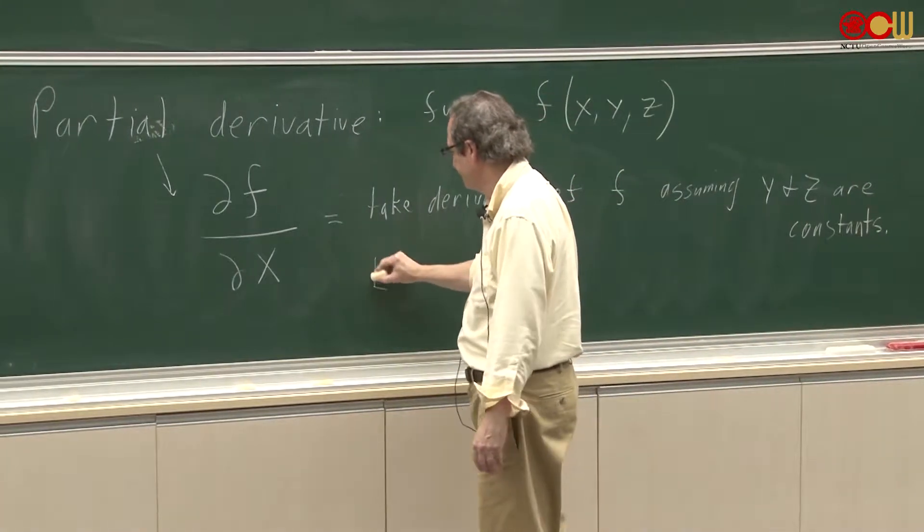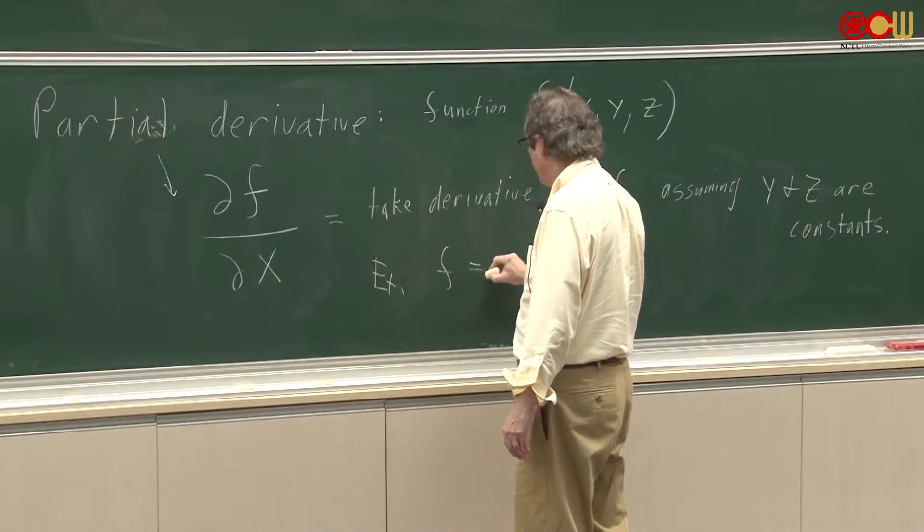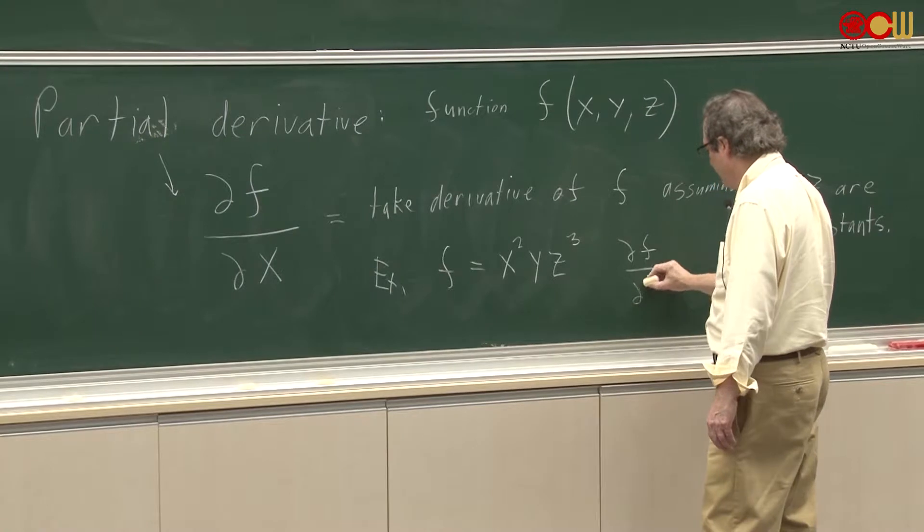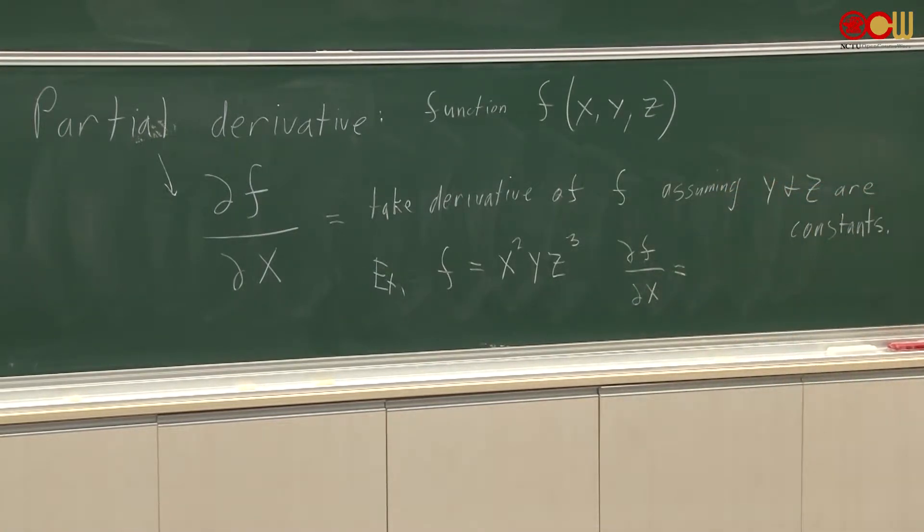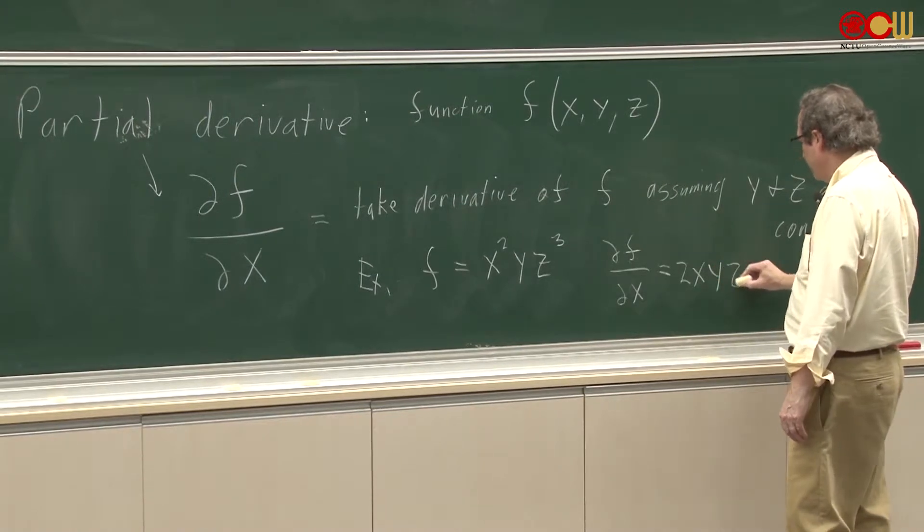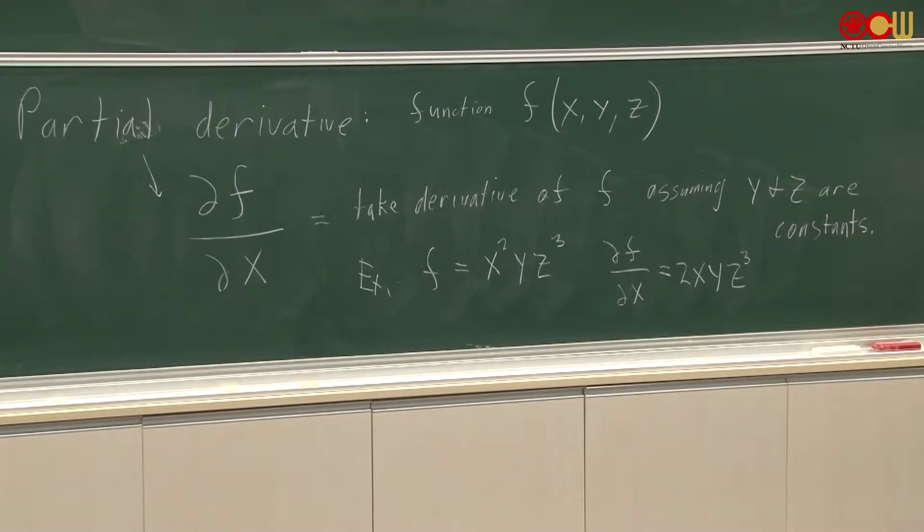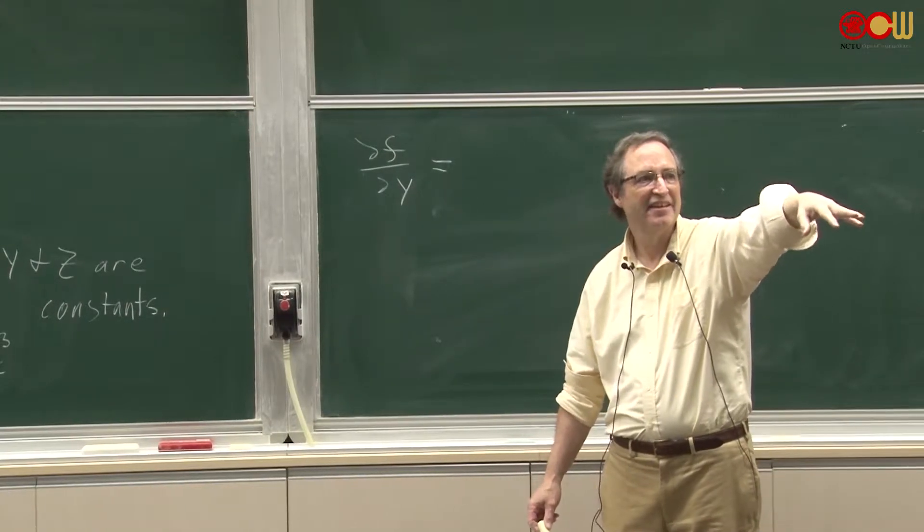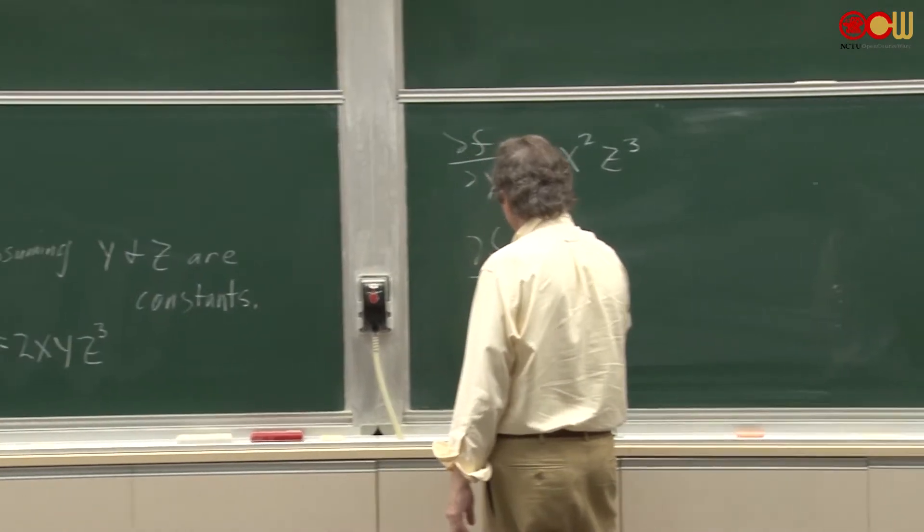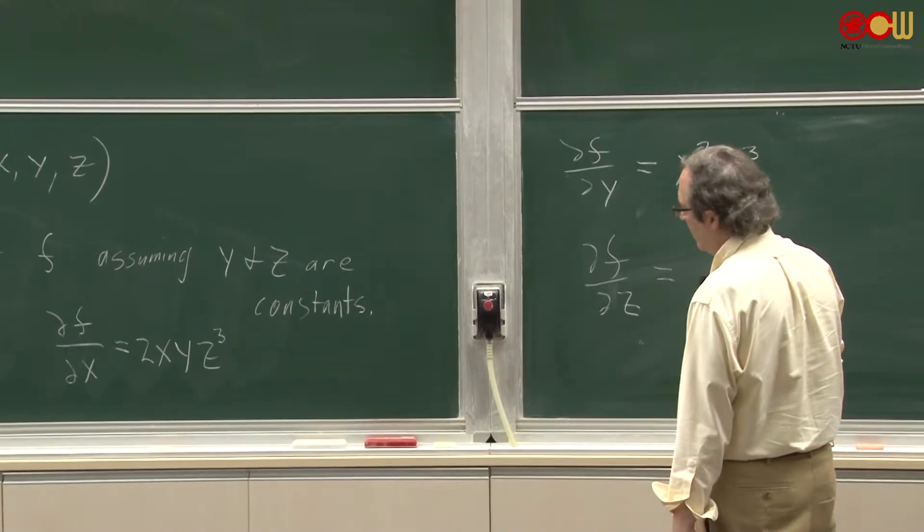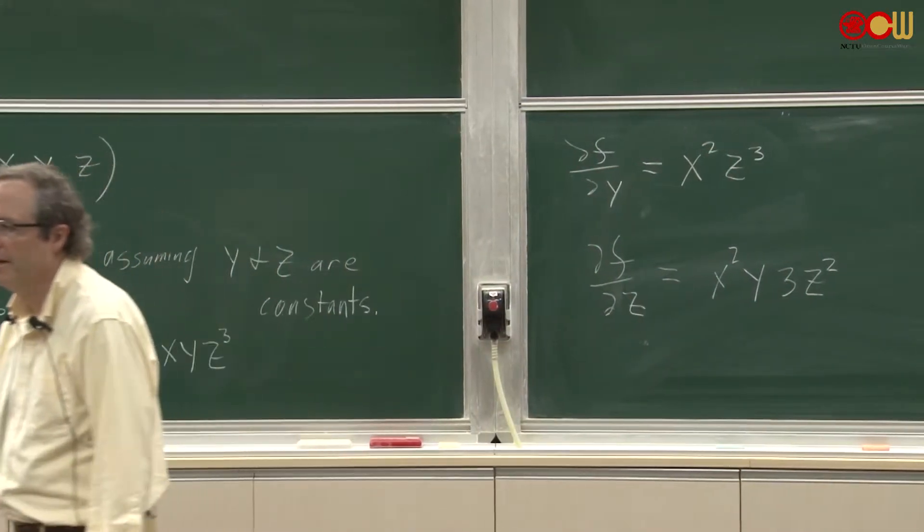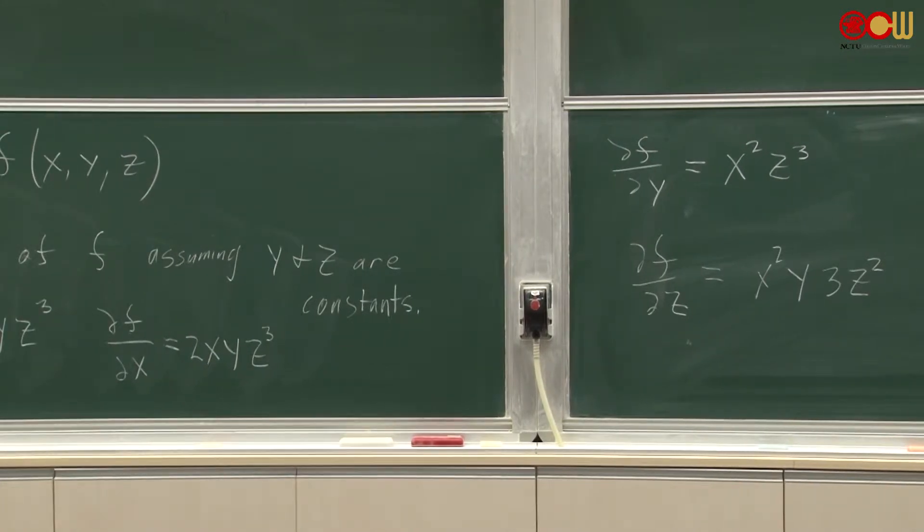So for example, let's say I had f equals x squared y z cubed. What would the partial of f with respect to x be? What would that be? So it would be 2x y z cubed. Good. What would the partial of f with respect to y be? What would it be? So it would be just x squared z cubed. And the last one, partial of f with respect to z, would just be x squared y 3z squared. That's a pretty straightforward idea. It's called a partial derivative.